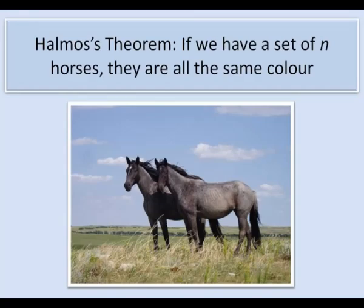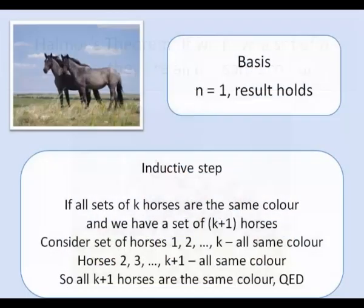Again induction on n. We're going to use induction on the number of horses in the set. If n=1, then we have a set containing only one horse so it's certainly true that all the horses in that set are the same colour. For the inductive step,